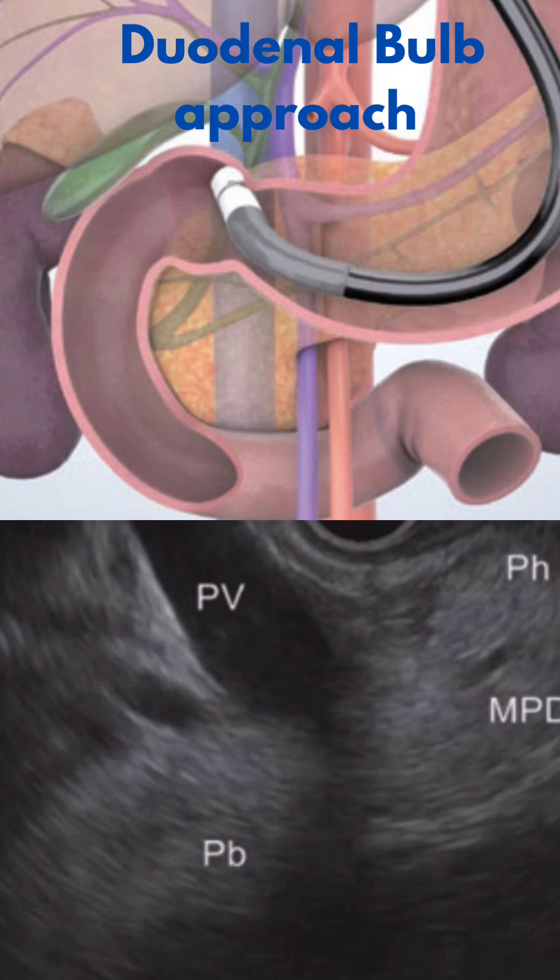If you notice here, the tip beam traverses through the portal vein to the pancreatic body. That's why you can also visualize the pancreatic body on the left side of the screen. Let's take a look at the pancreatic body and see what it looks like.